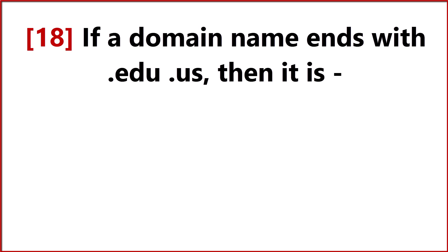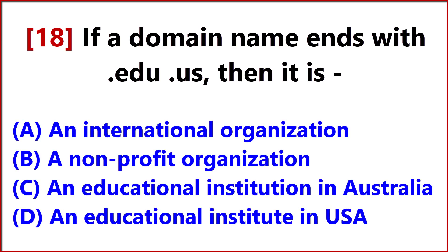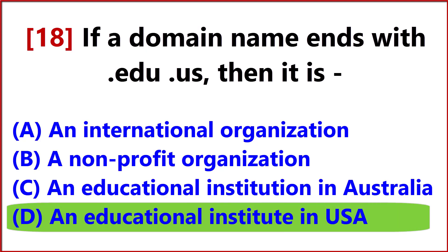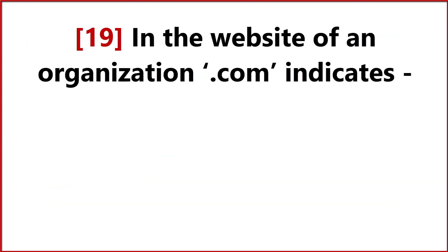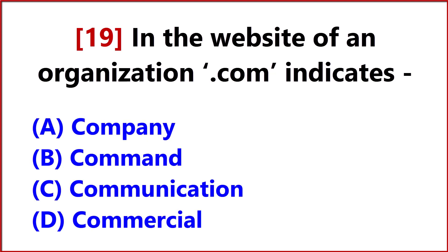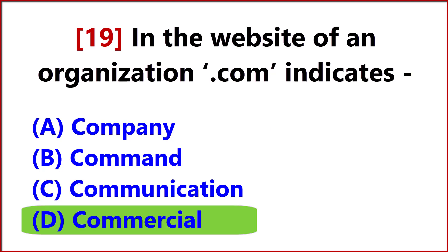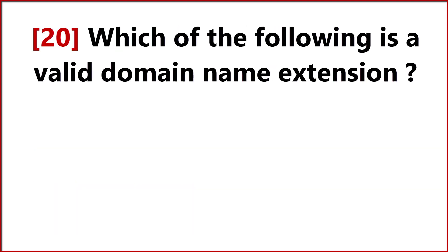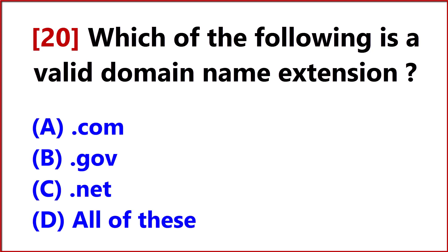If a domain name ends with .edu and .us, then it is Answer, Option D, An Educational Institute in USA. In the website of an organization, .com indicates Answer, Option D, Commercial. Which of the following is a valid domain name extension? Answer, Option D, All of these.